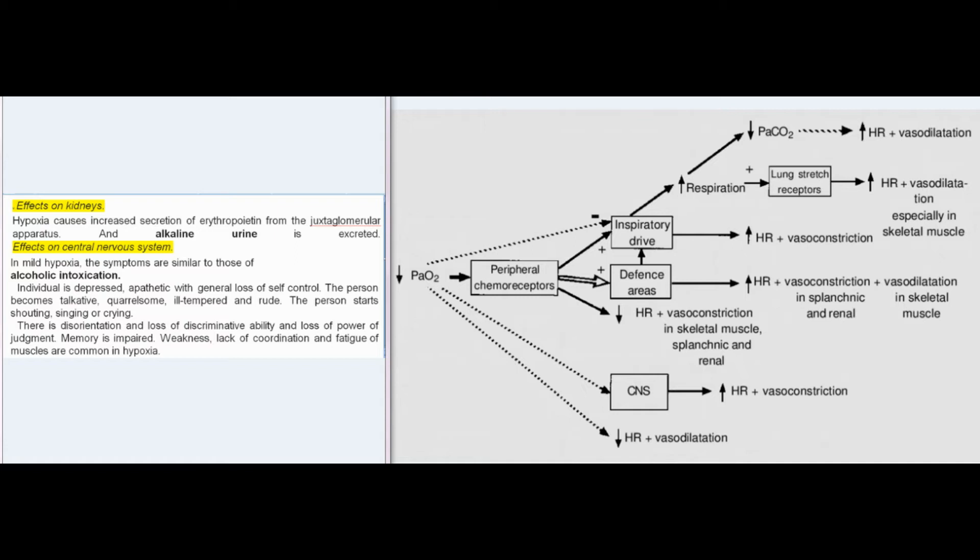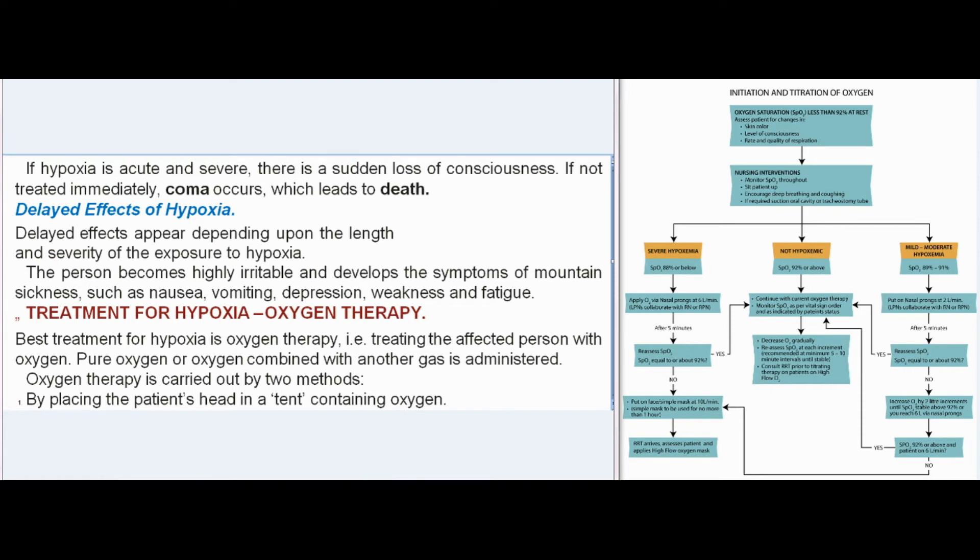Effects on the central nervous system: in mild hypoxia, symptoms are similar to alcoholic intoxication — the individual is depressed, apathetic with general loss of self-control, becomes talkative, quarrelsome, ill-tempered, and rude, shouting, singing, or crying. There is disorientation, loss of discriminative ability and power of judgment, and memory is impaired. Weakness, lack of coordination, and fatigue of muscles are common. If hypoxia is acute and severe, there is sudden loss of consciousness, followed by coma and death.